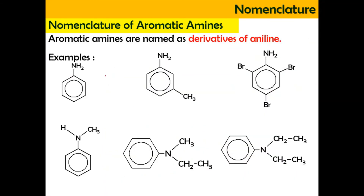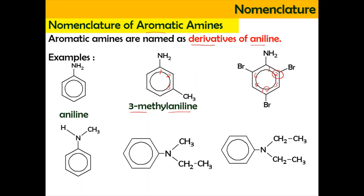Now let's look into the nomenclature of aromatic amines. Aromatic amines are basically derivatives of aniline. This basic structure here is known as aniline. If aniline has a substituent, for example here, we name it as 3-methylaniline. And if we have more substituents at positions 2, 4, and 6, it is going to be 2,4,6-tribromoaniline.